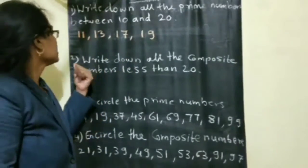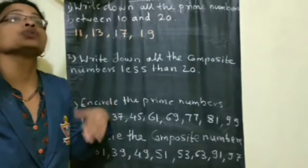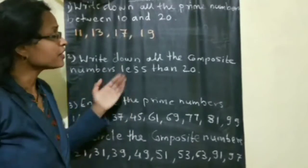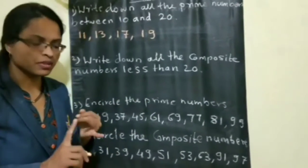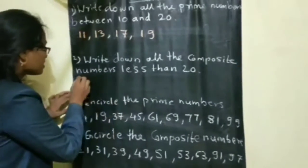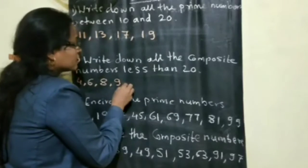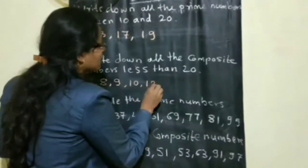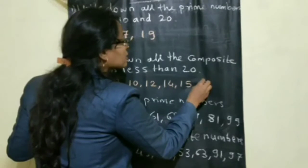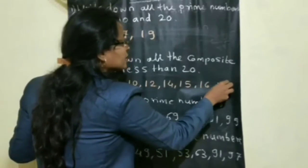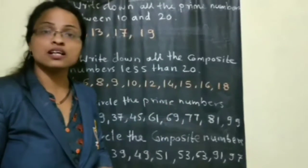Second question: write down all the composite numbers less than 20, meaning from 1 to 19. We have to see which composite numbers appear there. 2 is not a composite number. 3 is not a composite number. 4 is a composite number, then 6, then 9, then 10, then 12, then 14, then 15, then 16, then 18. These are the composite numbers less than 20.